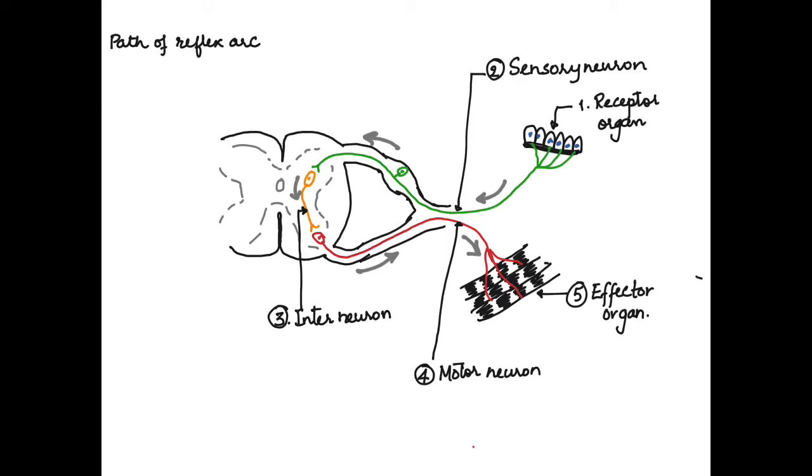First is the cytons of the sensory neuron. The cytons of all the sensory neurons lie in the dorsal root ganglion, so the swelling in the dorsal root is the place where all the cytons are located. Then we label the dorsal root.